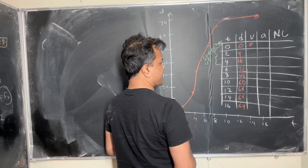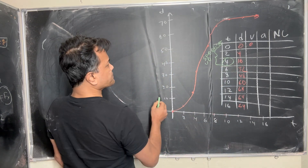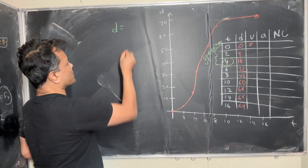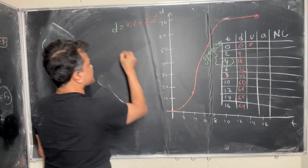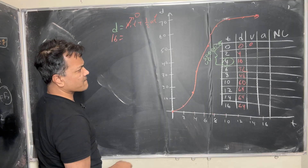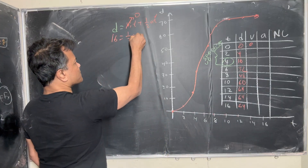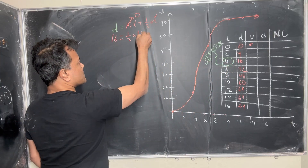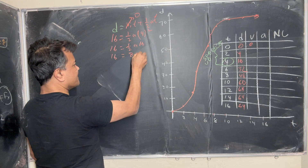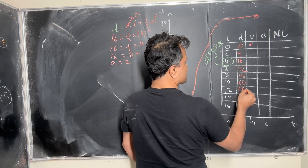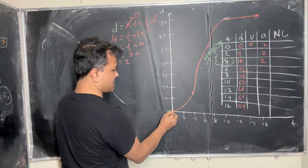We have to find the acceleration. Let's find the acceleration at four seconds. Using d = v_i·t + ½·a·t², at t = 4 seconds: 16 = 0 + ½·a·16, so 16 = 8a, therefore a = 2. The acceleration is 2 from zero to four seconds.